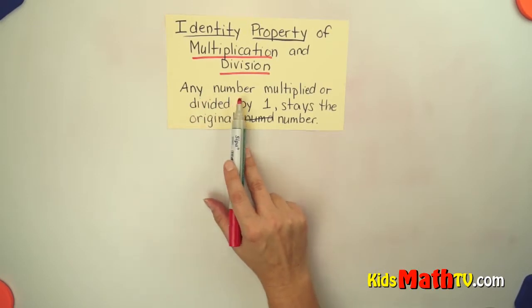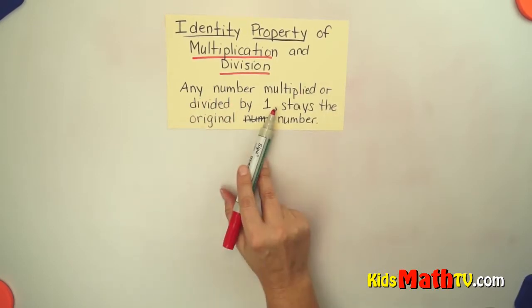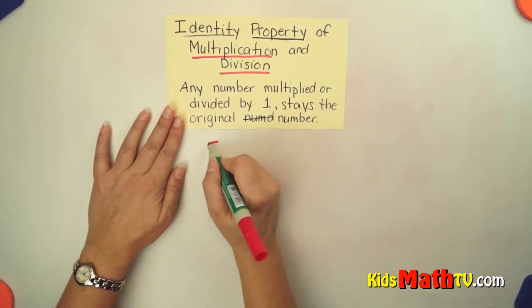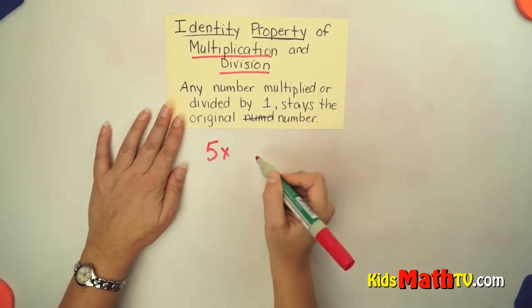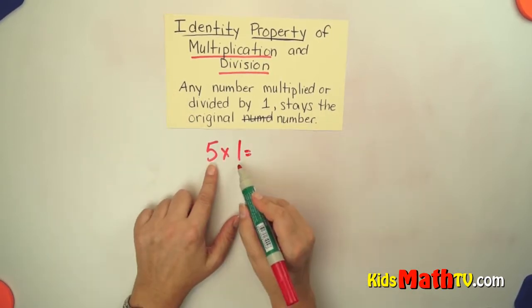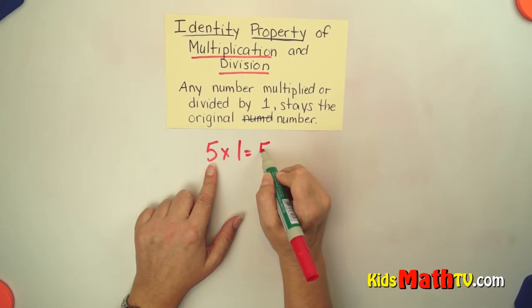Basically it says that any number multiplied or divided by one stays the original number. So no matter what number you have, if you have five and you multiply it by one, you have five groups of one or one group of five, the answer is five.